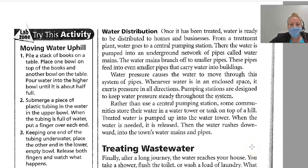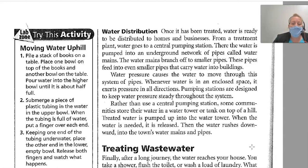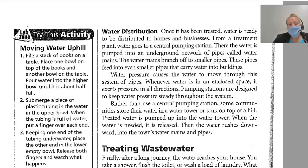Water Distribution. Once treated, water is ready to be distributed to homes and businesses. From a treatment plant, water goes to a central pumping station, where it is pumped into an underground network of pipes called water mains. The water mains branch off to smaller pipes, which feed into even smaller pipes that carry water into buildings. Water pressure causes the water to move through this system of pipes — whenever water is in an enclosed space, it exerts pressure in all directions. Pumping stations are designed to keep water pressure steady. Some communities instead store water in a water tower or tank on top of a hill. Treated water is pumped up into the tower and released when needed, rushing downward into the town's water mains and pipes.